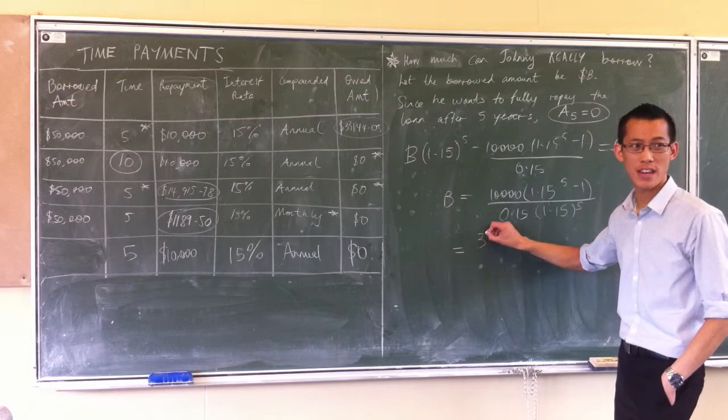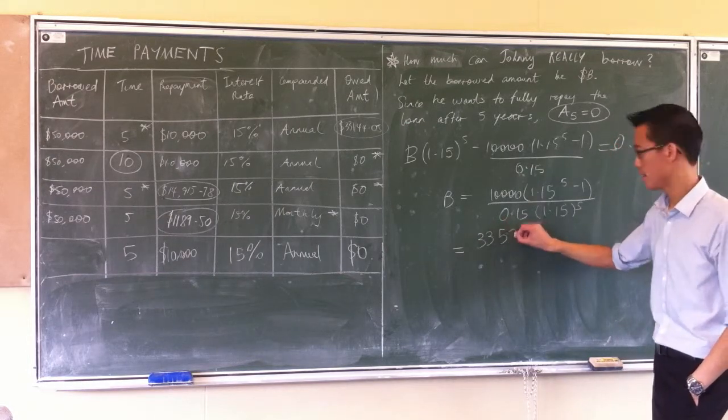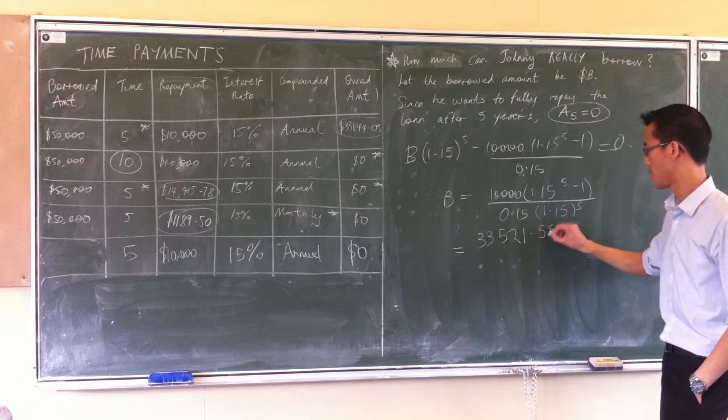It's like 33... What are the rest of the numbers? 33,521... Yep, 5,098. Thank you.